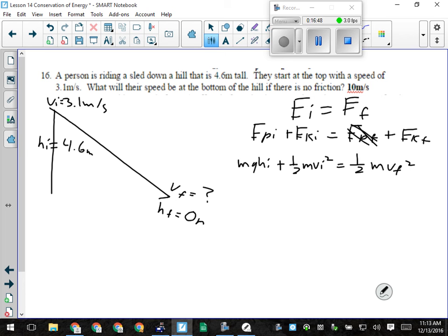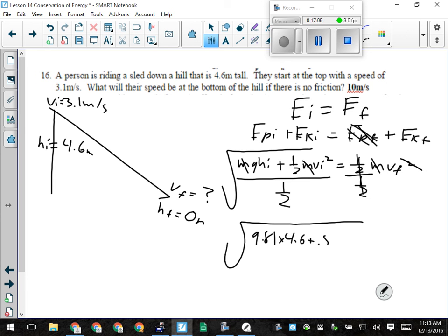M times G times HI plus 1 half MVI squared equals 1 half MVF squared. I'm trying to find VF, OK? The M's will cancel off. I can get rid of those right now. And then I'm going to divide both sides by 1 half. And then I'm going to square root. OK. So that'll be 9.81 times 4.6 plus 0.5 times 3.1 squared divided by 1 half. OK. I should get 10 meters per second at the bottom. Alright. Are these all kind of formulaic? Like, do they all kind of follow the same pattern? OK. Once we get the pattern down, guys, it's just a matter of recognizing which pattern to use. OK. Any ones I haven't gone over that you would like to go over? OK. Keep working on it, then.